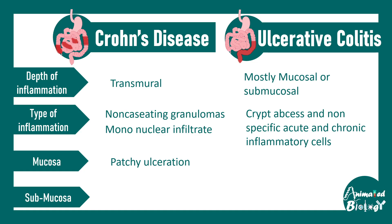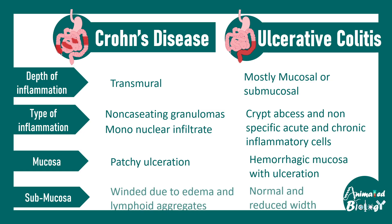Regarding mucosal damage: ulceration is patchy in Crohn's disease, whereas in ulcerative colitis it is hemorrhagic in nature, continuous, and spans all over the mucosa. The submucosa is widened in Crohn's disease due to edema and lymphoid aggregates, whereas the submucosa is overall normal in ulcerative colitis since only the mucosa is affected — though sometimes it may also be reduced in width.